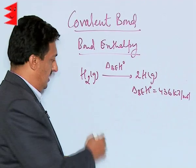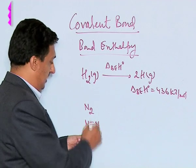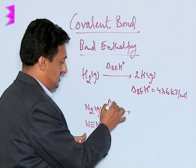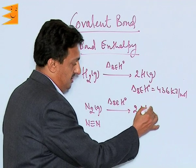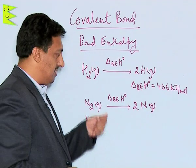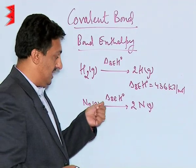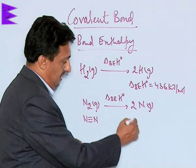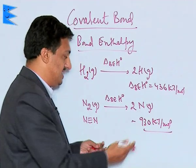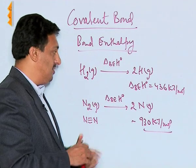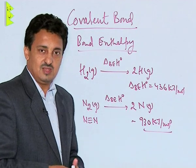Similarly, in the case of a nitrogen molecule, nitrogen has a triple bond between its two atoms. A very large amount of energy is required to break this bond so that the nitrogen atoms are converted into their respective gaseous state. The bond enthalpy of nitrogen is approximately 946 kilojoules per mole, which is very high due to the triple bond.